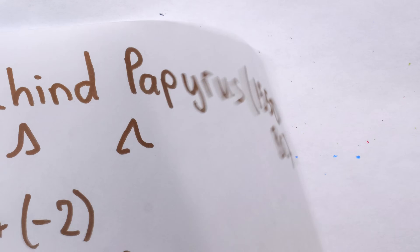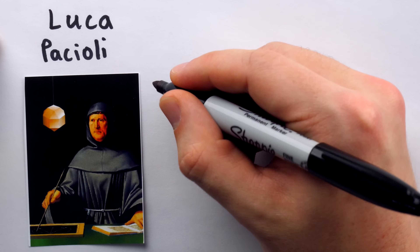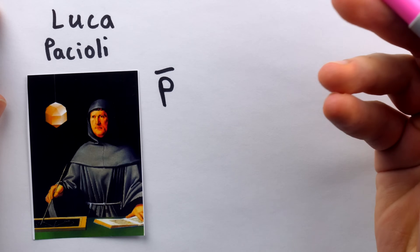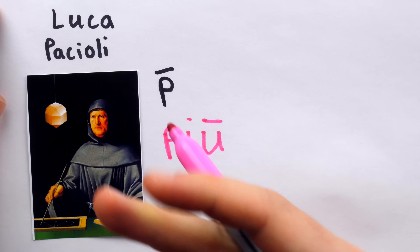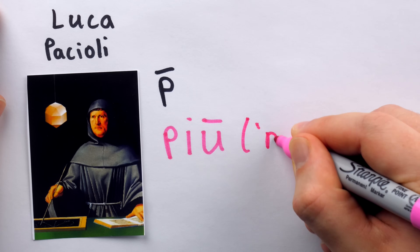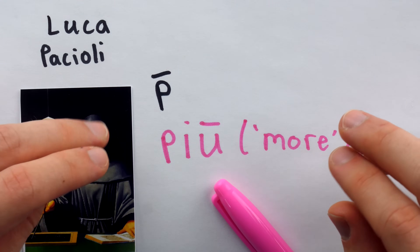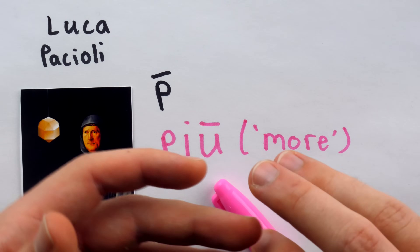If we fast forward about 3,000 years from the Rhind Papyrus, we get to Luca Pacioli in 1494. He released a compendium of mathematics titled 'Summa De Arithmetica Geometria Proporcione et Proporcionalita,' in which he used a P with an overline as the symbol for addition. The reasoning behind this symbol was the Italian word 'piu,' which meant 'more.' For a while, mathematics was in a rhetorical phase where problems were posed and solved with words, so the need for symbols was not as significant.